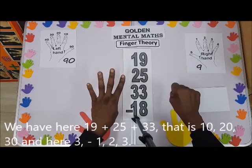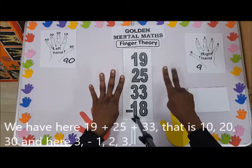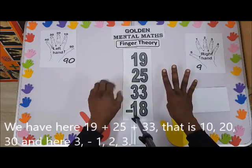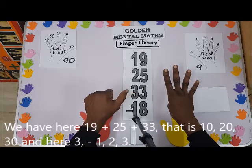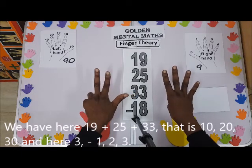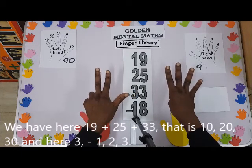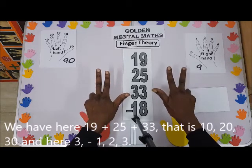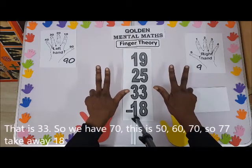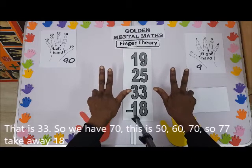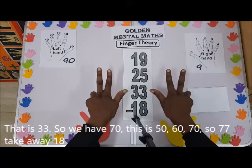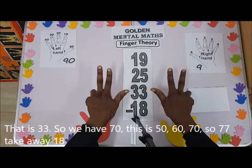Plus 33: that is 10, 20, 30 on the left, and here 3 — 1, 2, 3 — that is 33. So we have how much? 70: this is 50, 60, 70. So 77. 77.